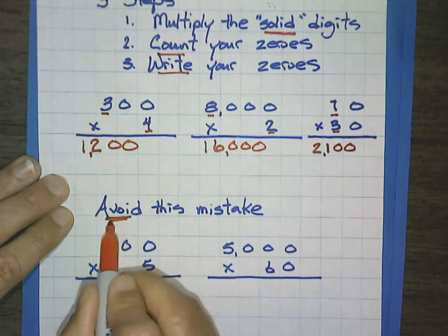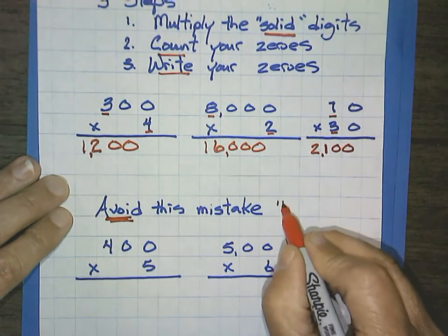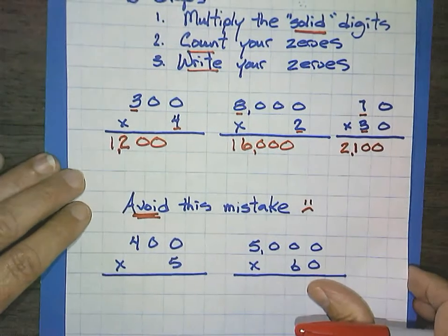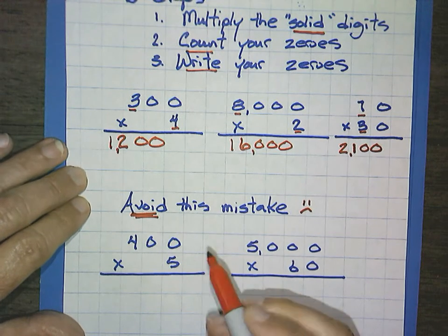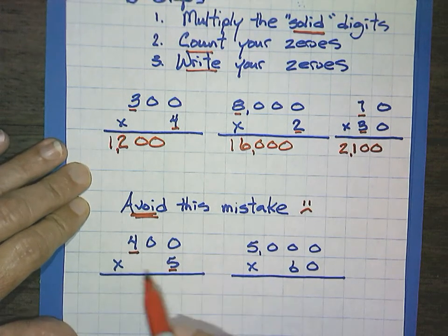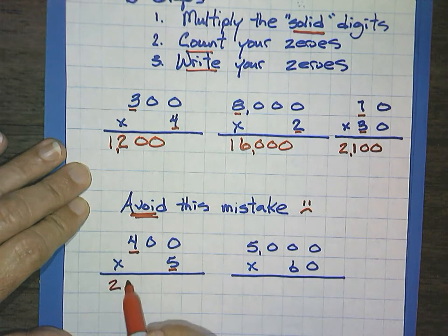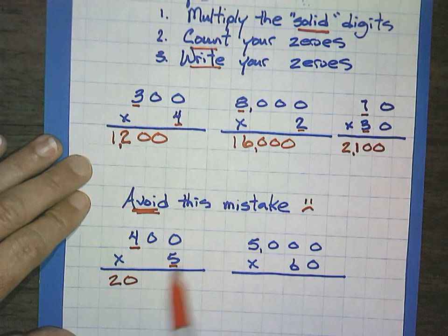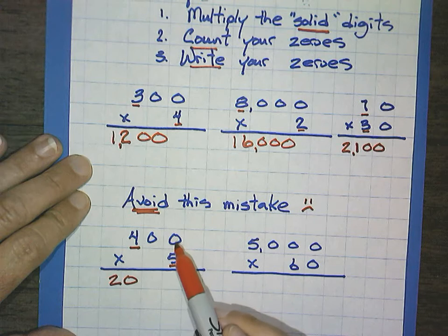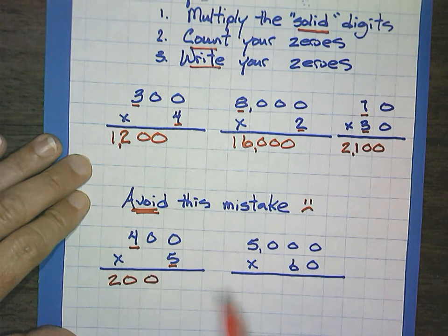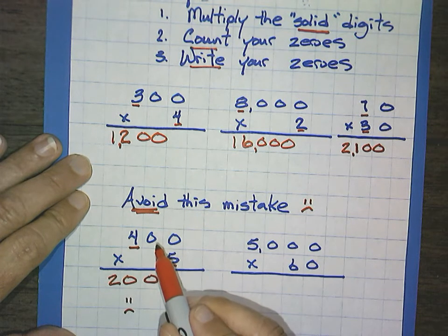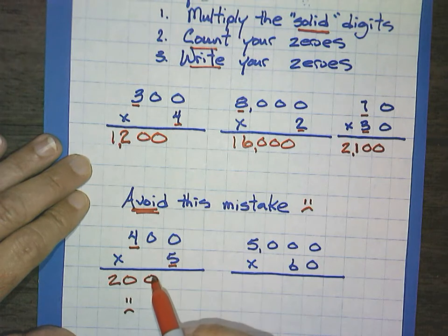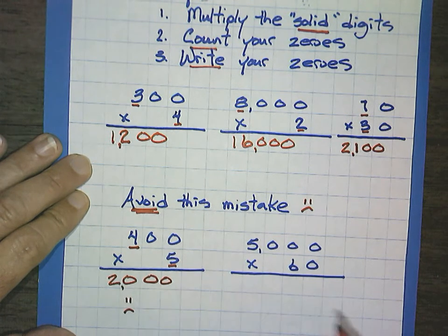Now, you want to avoid this mistake. In problems like this that have fives, we'll just watch. Our solid number is 4 times 5. 4 times 5 is 20. Now, notice that your answer for the solid numbers had a zero. So sometimes students will get confused and think, well, there's two zeros and there's already one here, and they just add one zero. Well, that would be the wrong answer. And so make sure that you count two zeros. So 1, 2. Now, I wrote one already. So I would have to add that second one. So be careful about that.